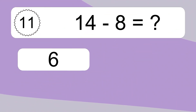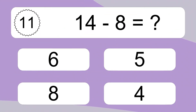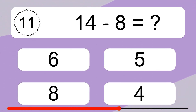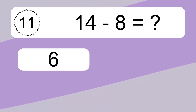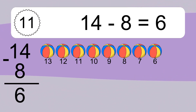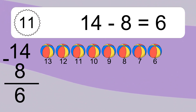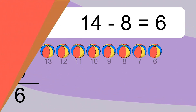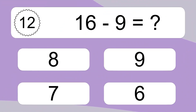14 minus 8 equals what? 14 minus 8 equals 6. Let's count it: 13, 12, 11, 10, 9, 8, 7, 6.